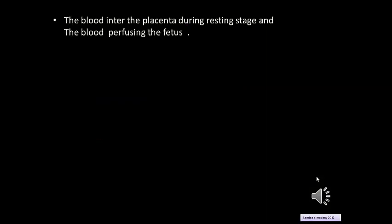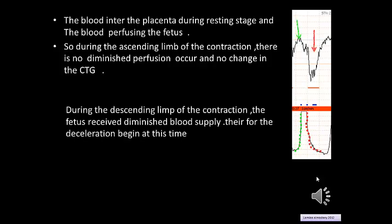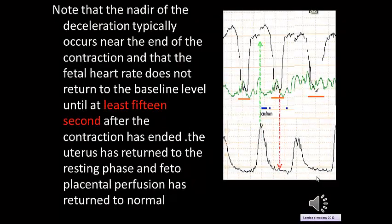To understand late deceleration: blood enters the placenta during the resting phase and perfuses the fetus. During the ascending limb of the contraction, there is no diminished perfusion and no change in the CTG. During the descending limb of the contraction, the fetus receives diminished blood supply and deceleration begins. The nadir of the deceleration typically occurs near the end of the contraction, and the fetal heart rate does not return to baseline until at least 15 seconds after the contraction has ended and uterine resting phase and fetal-placental perfusion have returned to normal.